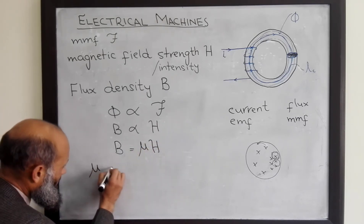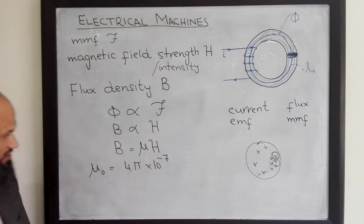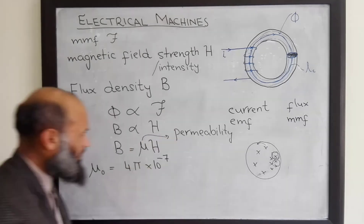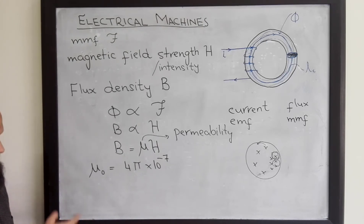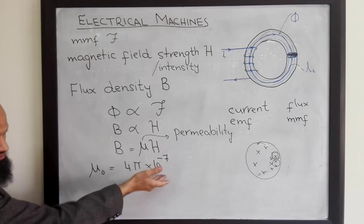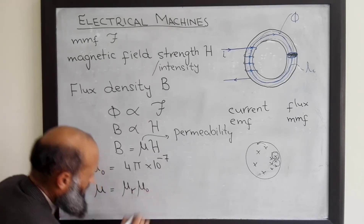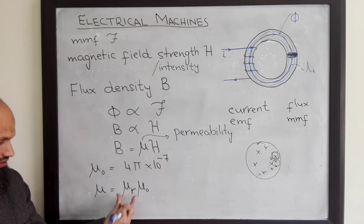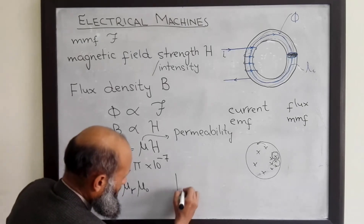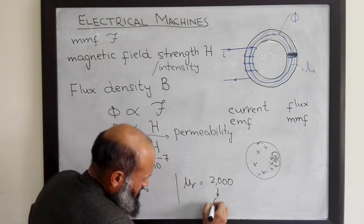For free space, the value of mu is 4π × 10⁻⁷, denoted by mu naught. This is called permeability. Permeability of free space is 4π × 10⁻⁷. For other materials, this value is different. For example, for steel, the permeability is about 3000 times that of free space. For other materials, we define relative permeability, denoted by mu r. For steel, relative permeability is about 2000 up to 6000.